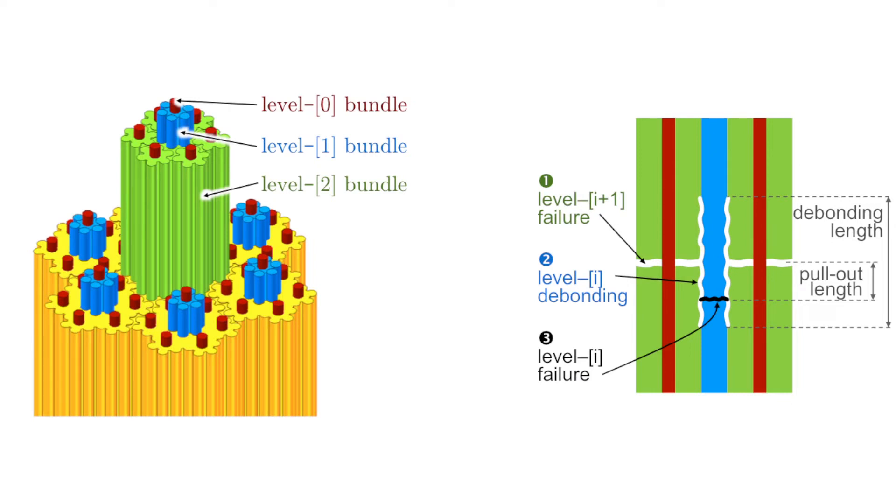But we then thought: what if we postulated a quasi-fractal morphology for the fractured surface and then calculated its dimensions at each scale using the previous strength model and fracture mechanics? This would define the fracture surface entirely, which would then allow the calculus of the energy dissipated in creating it.